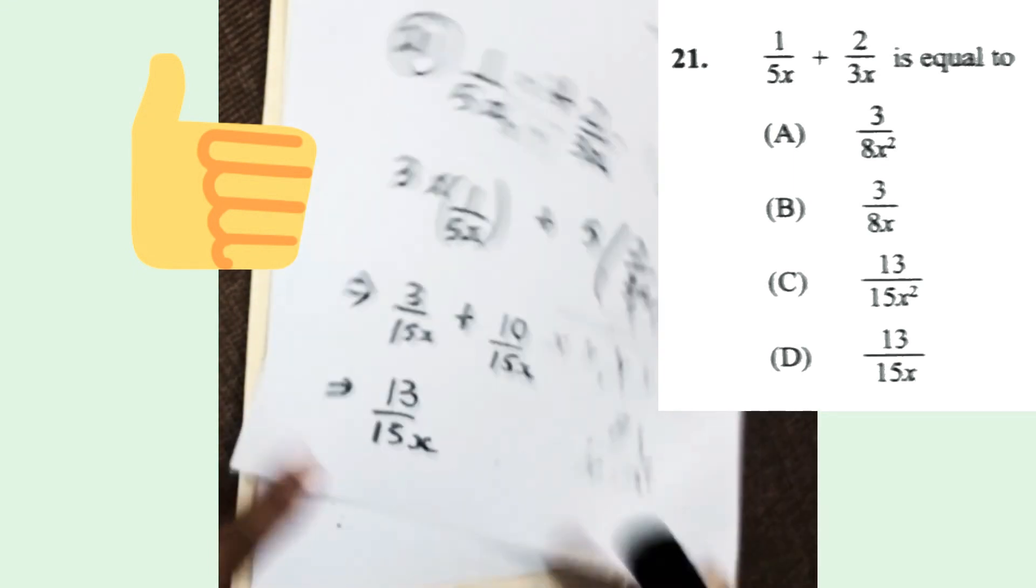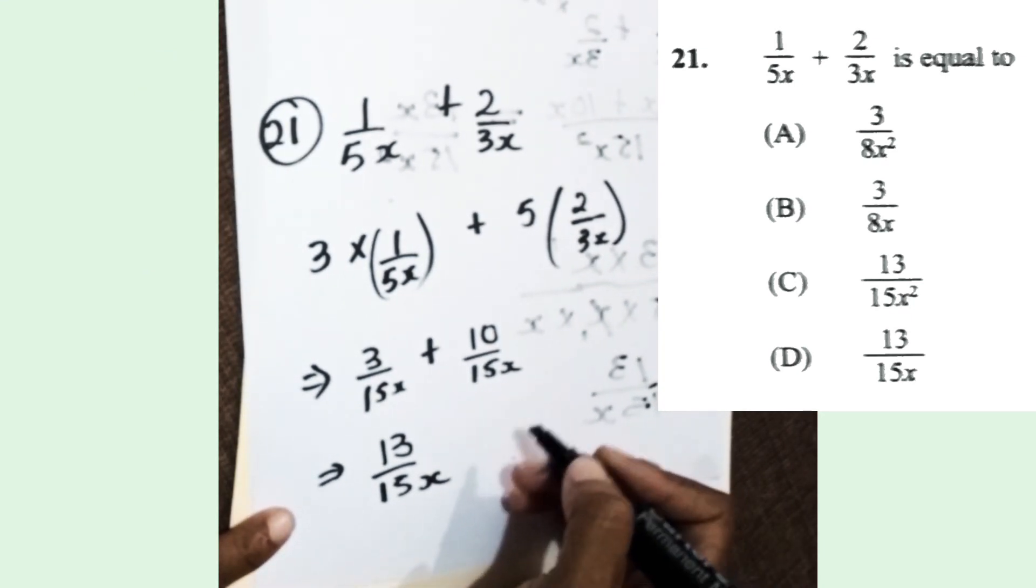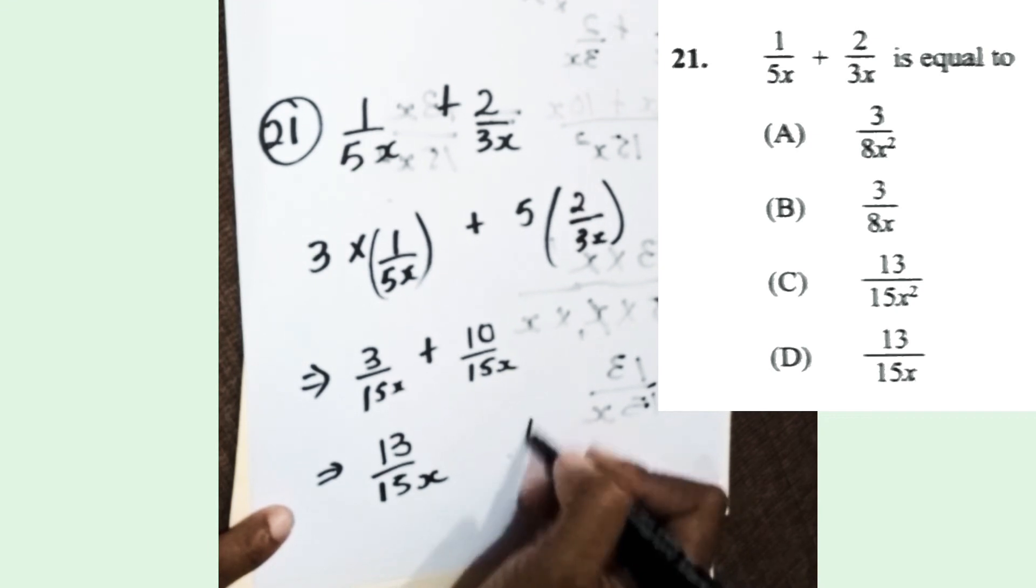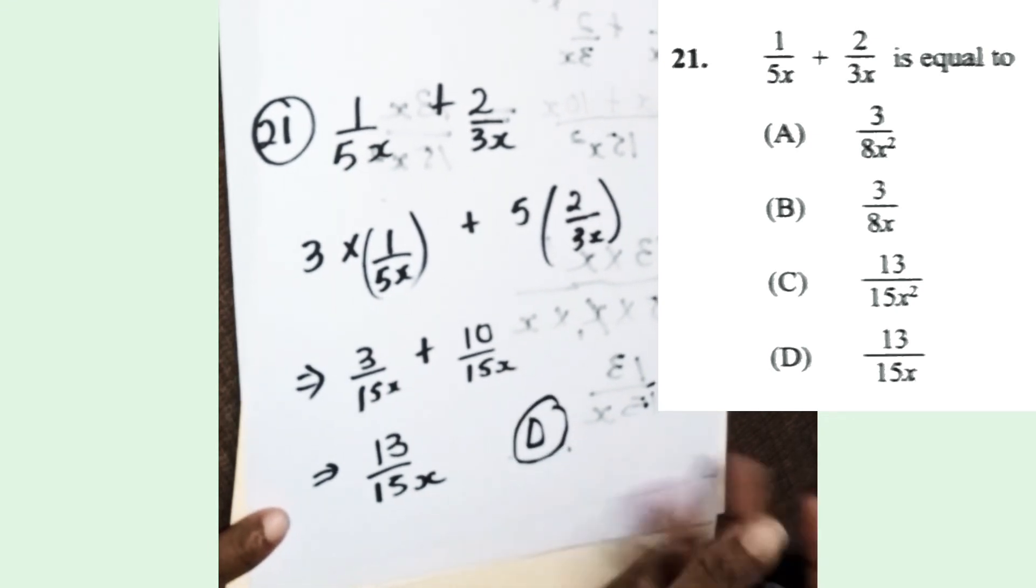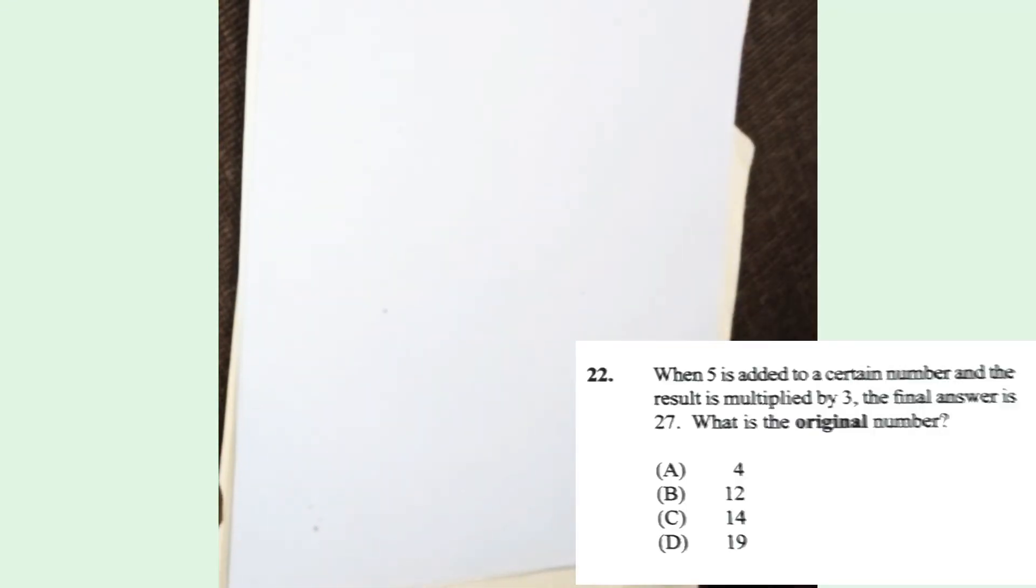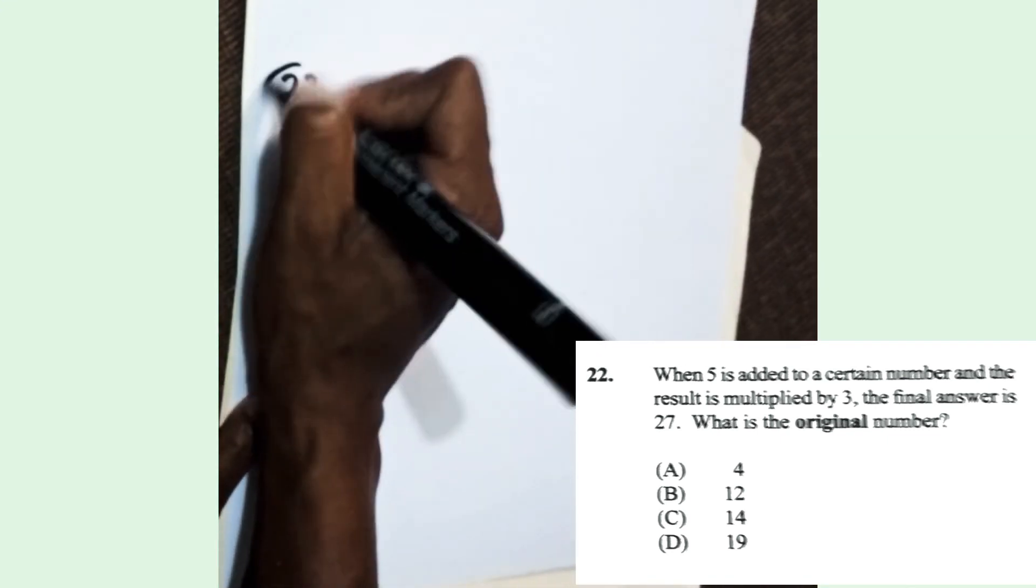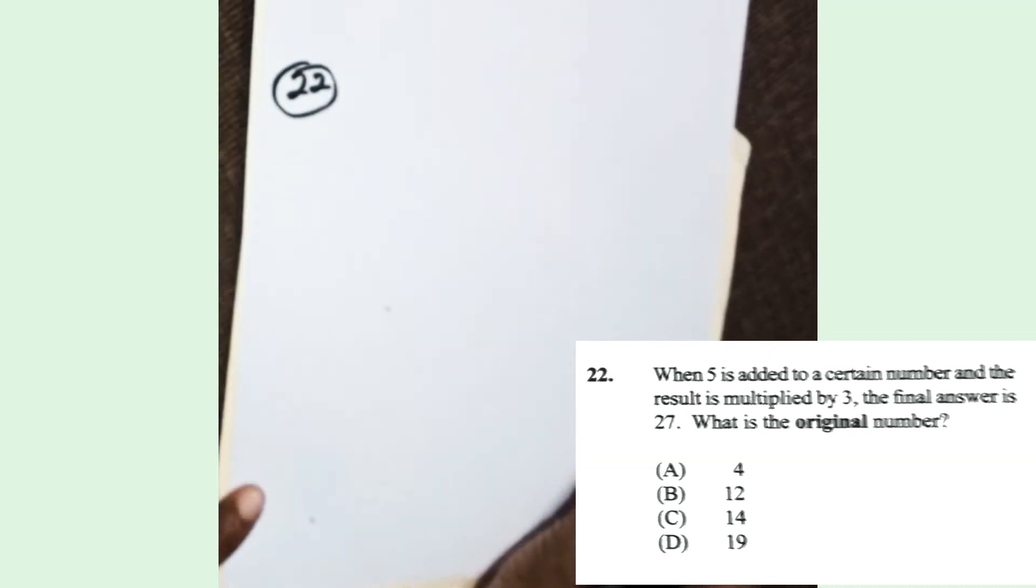And we still end up back with 13 over 15x. We get the same answer there, which means our answer is D. If you can master algebra, you will do well in the exam. The exam is mostly algebra.